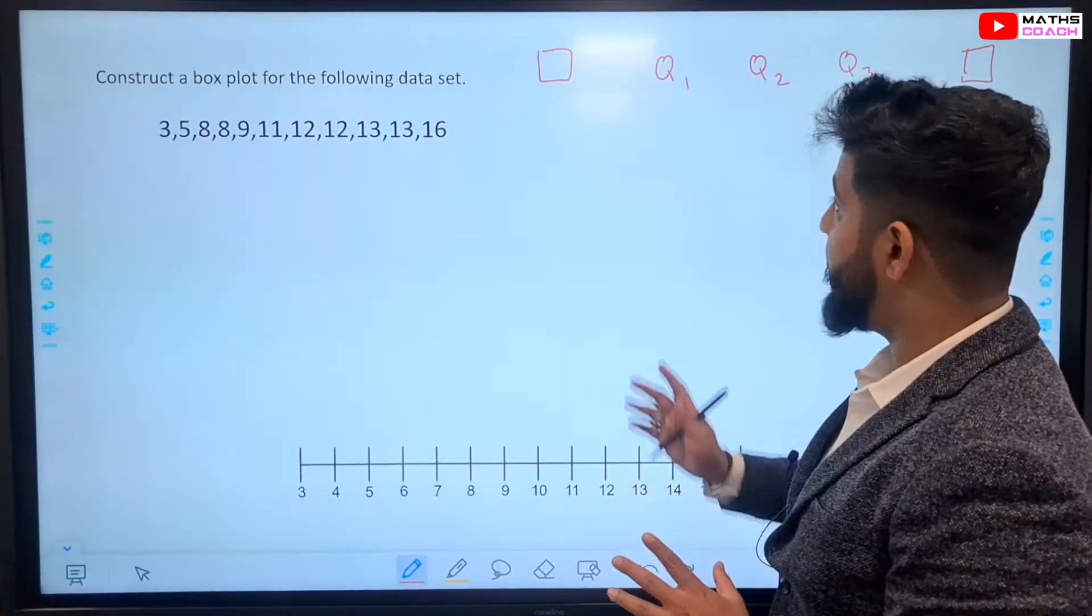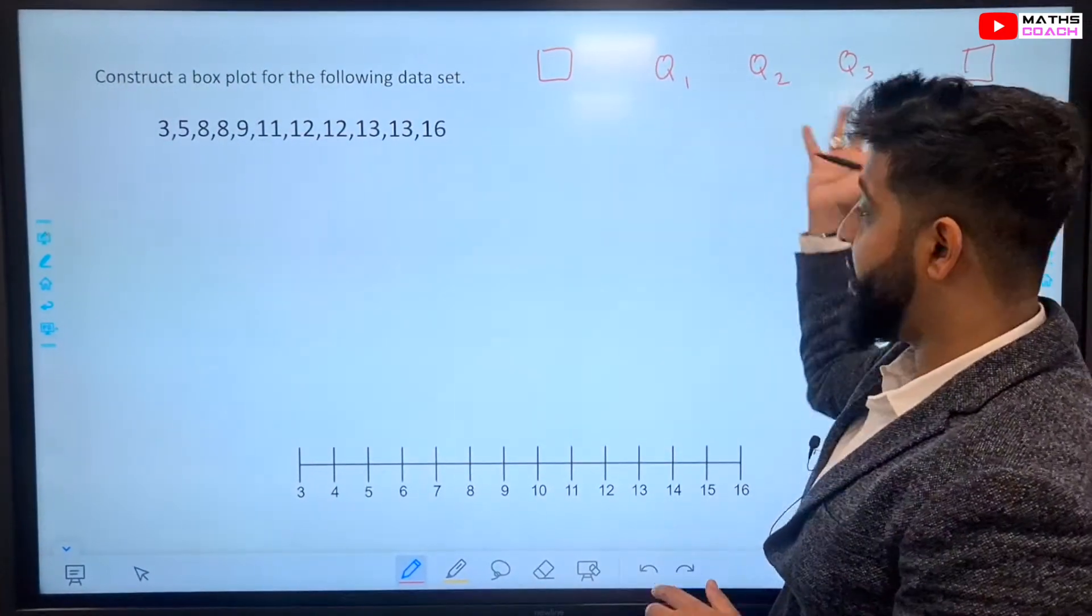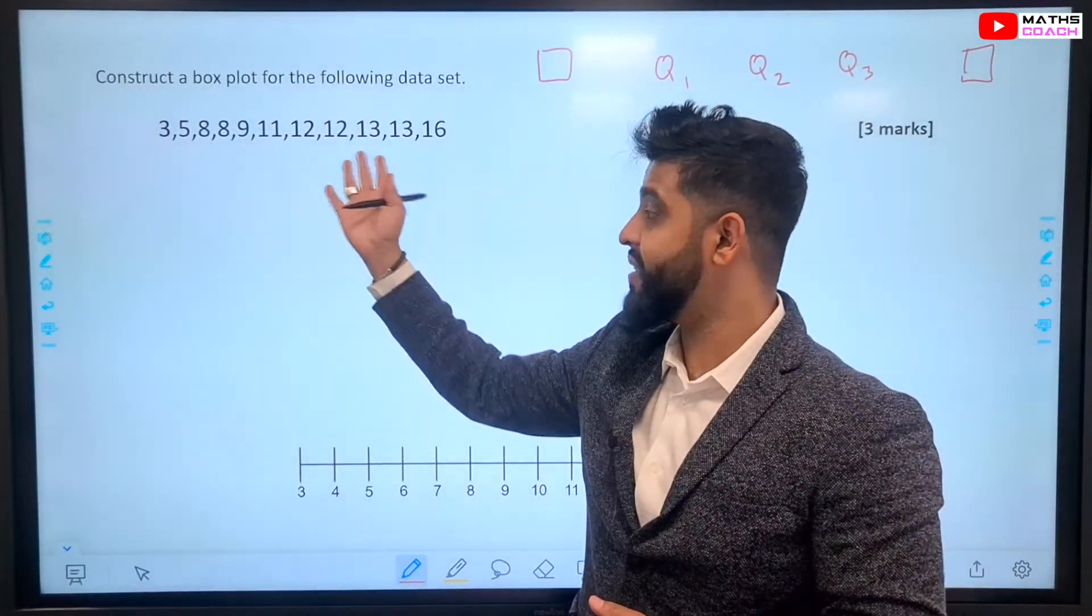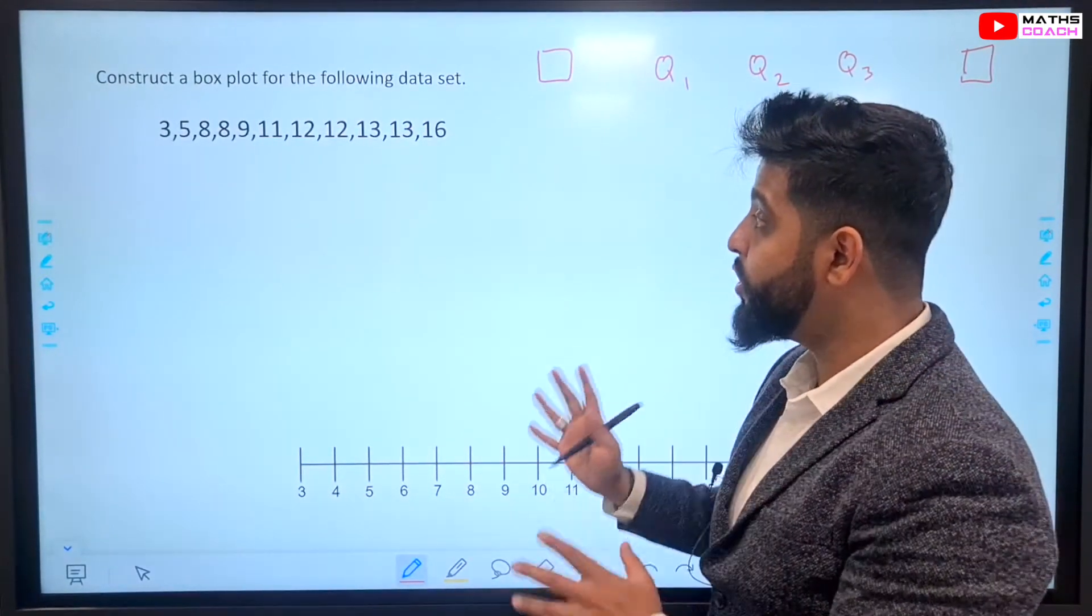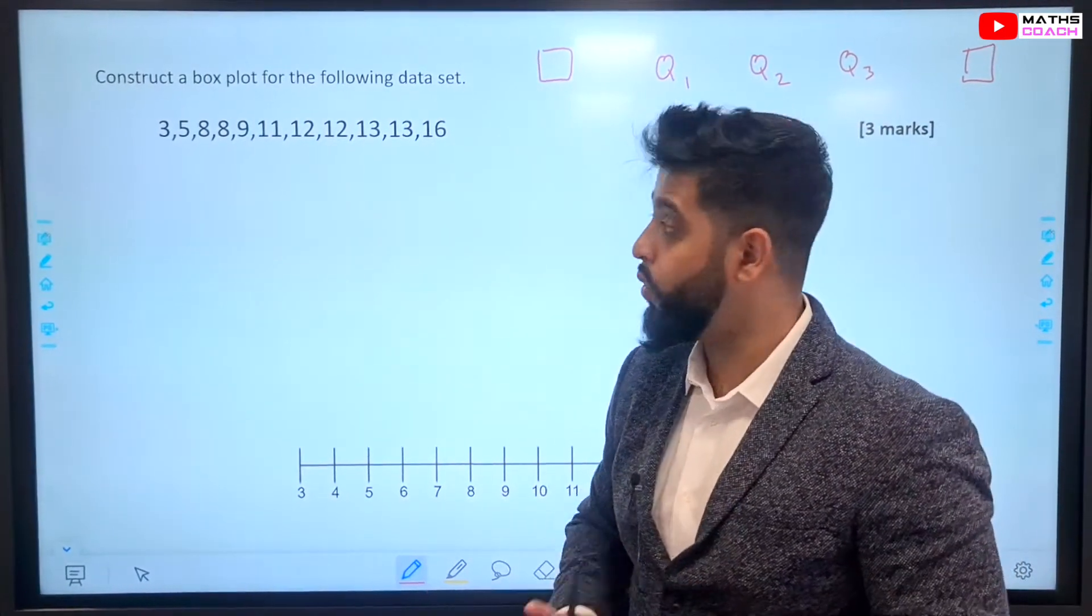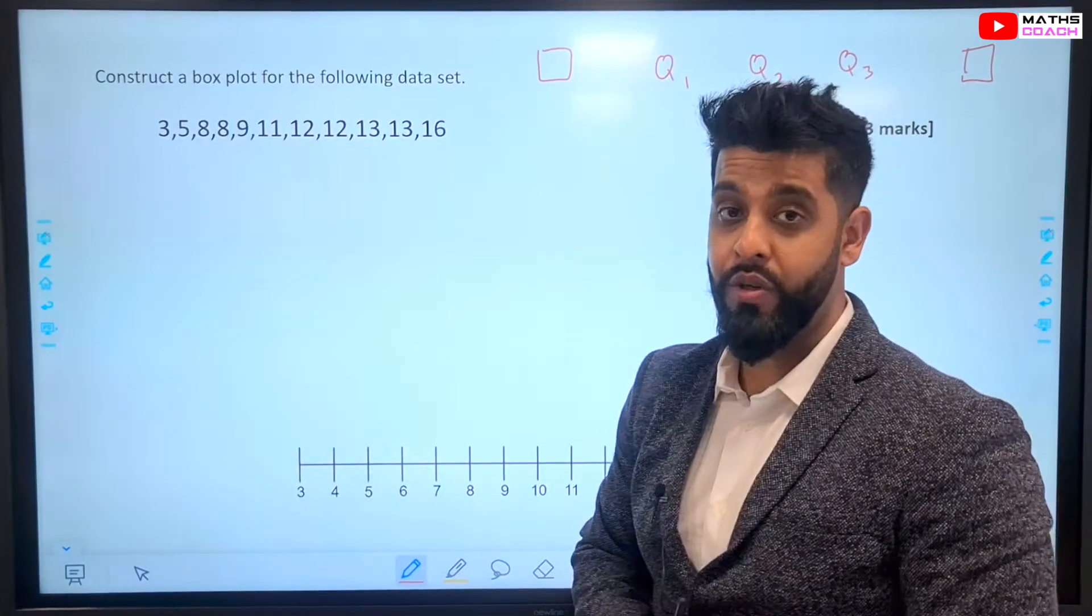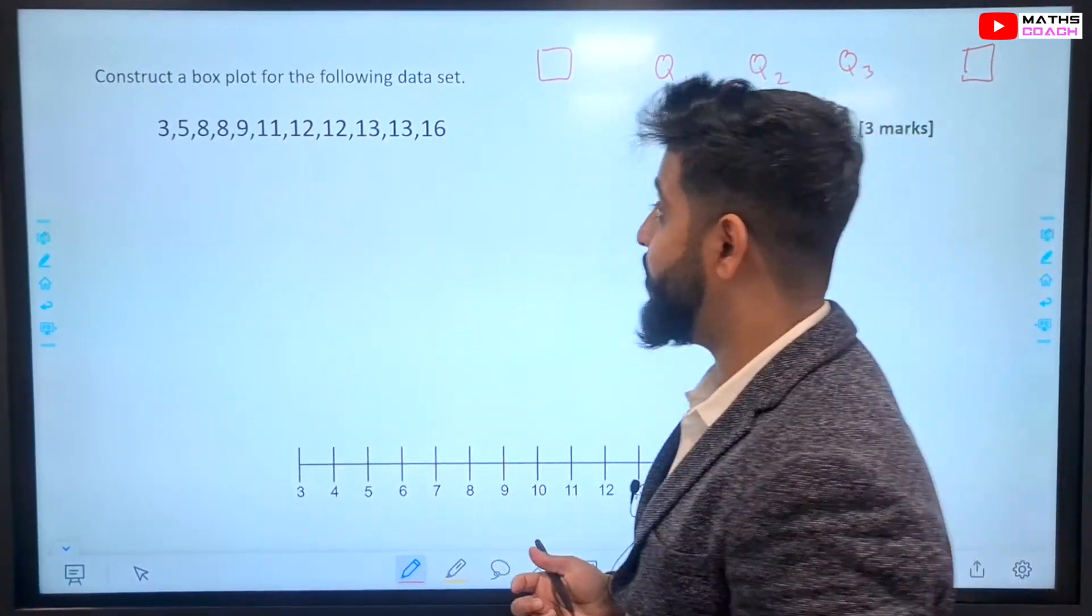Now, it is important to remember, in order to find the median, the upper quartile and the lower quartile, your data set has to be in order. So, do check if it is not in order. This group of numbers happens to be in order already. So, we can just go and find our values.